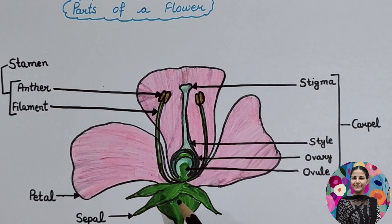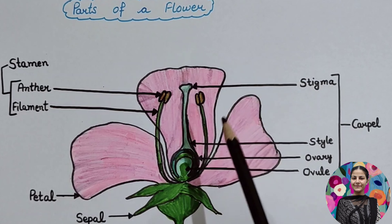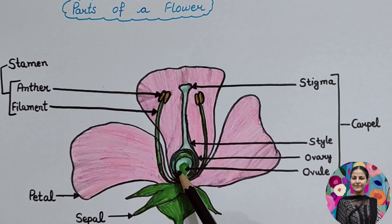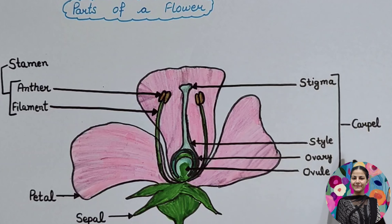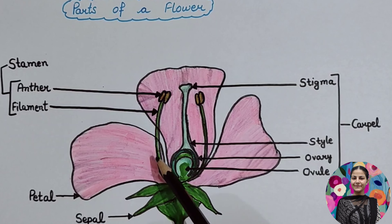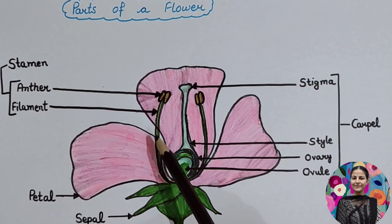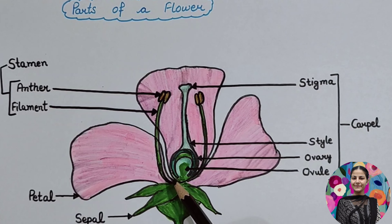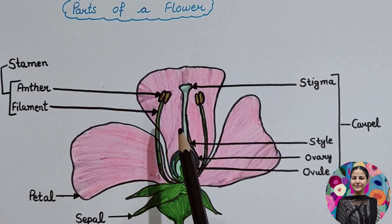Now we are looking at flower parts. We can see the ovary, style, and stigma — this is the carpel, which is the female reproductive part. Below the flower, the filament is attached, and the petals are also attached to the filament. Collectively, this filament and anther structure is called the stamen, which is the male reproductive part.